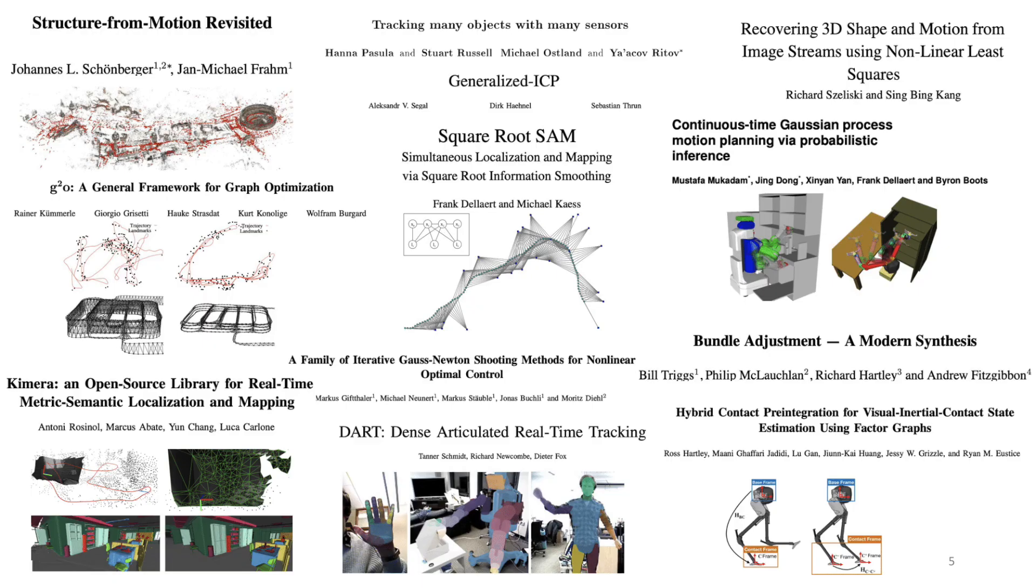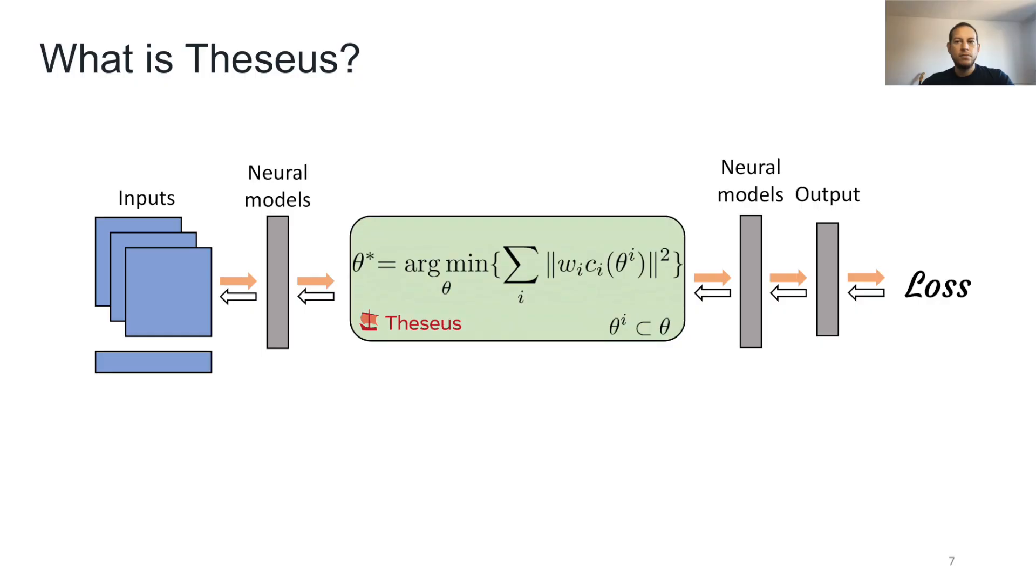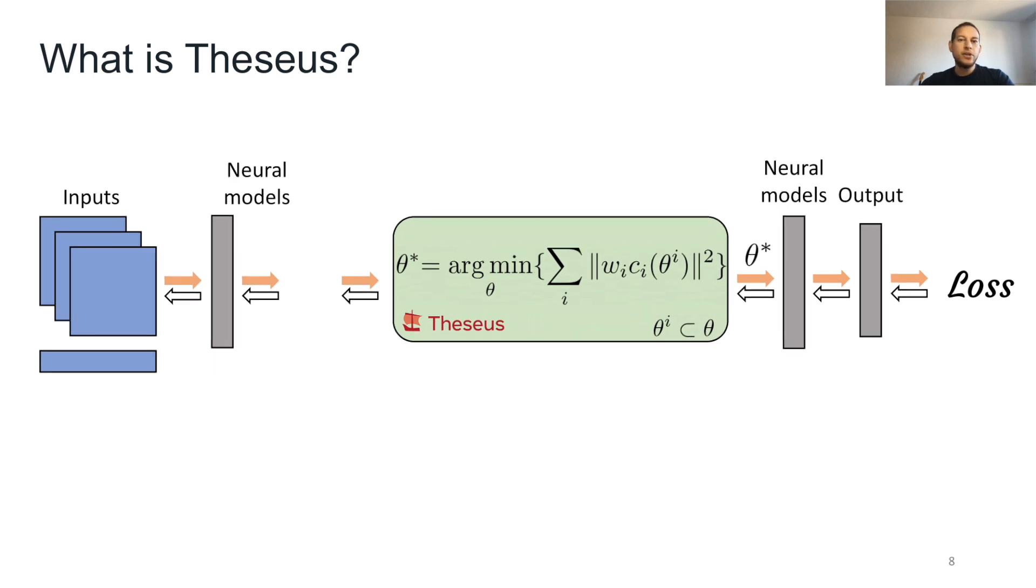But why Theseus? Well, nonlinear optimization is at the heart of many problems in robotics and vision, ranging from SLAM and estimation to planning and control. Moreover, combining the complementary strengths of traditional approaches and deep learning is a common thread in a large body of recent work. A key insight of such work is that optimization layers can work as inductive priors in neural models as a way to combine these approaches.